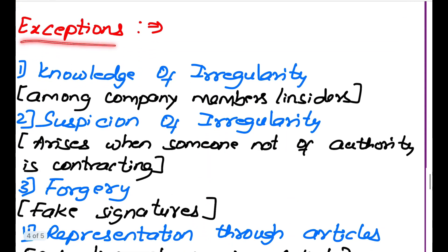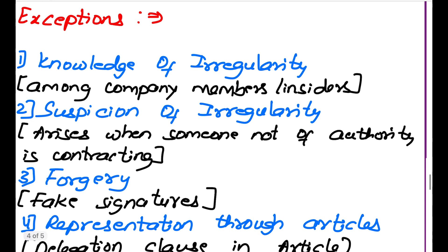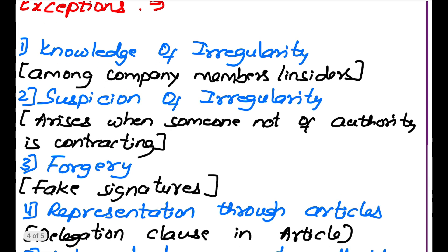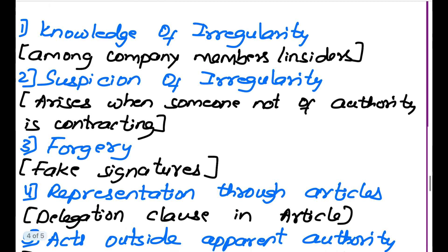Exceptions to the Doctrine of Indoor Management. The first is Knowledge of Irregularity — if both parties know that there is an irregularity, the doctrine does not apply. This can happen when the contract is between company members, i.e., insiders. Since insiders have full knowledge of the company, the Doctrine of Indoor Management does not attract.